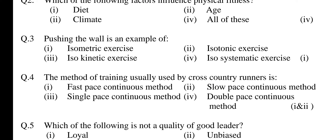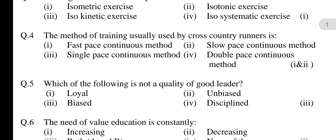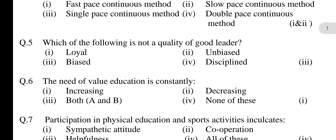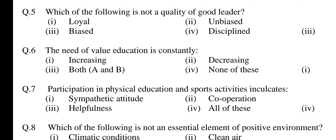Question 4: The method of training usually used by cross country runners is — option 1: Fast pace continuous method, 2: Slow pace continuous method, 3: Single pace continuous method, 4: Double pace continuous method. Answer is option 1 and 2 — fast pace continuous method and slow pace continuous method. Question 5: Which of the following is not a quality of a good leader? Option 1: Loyal, 2: Unwise, 3: Wise, 4: Disciplined. Answer is option 2 — unwise.